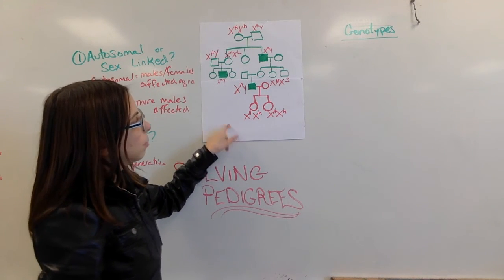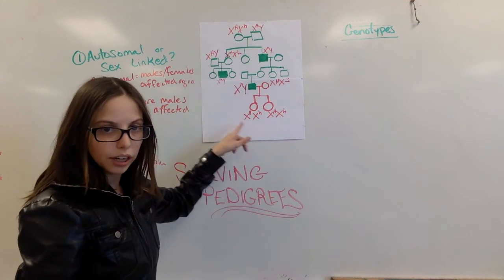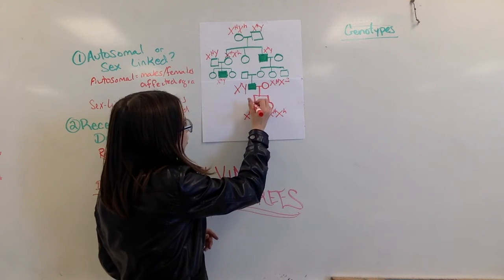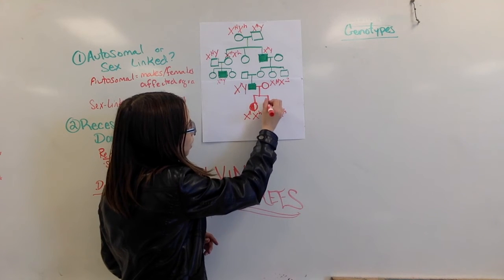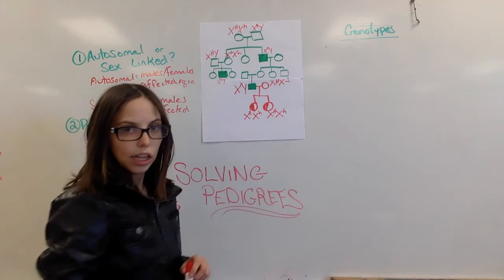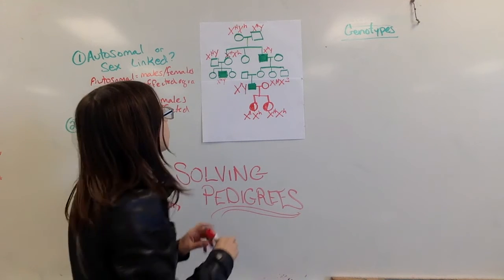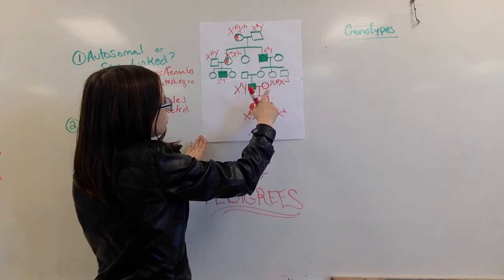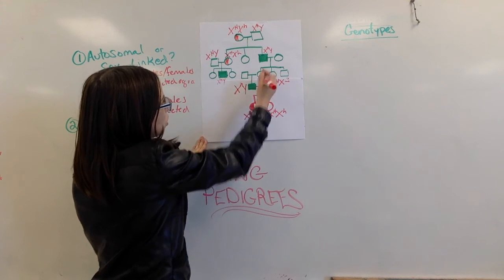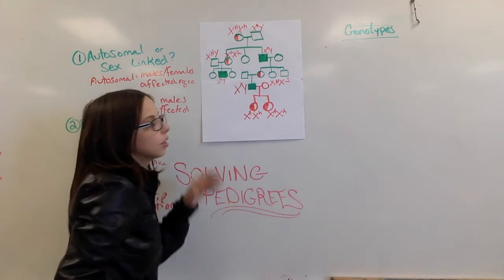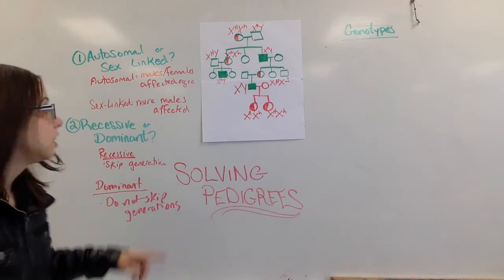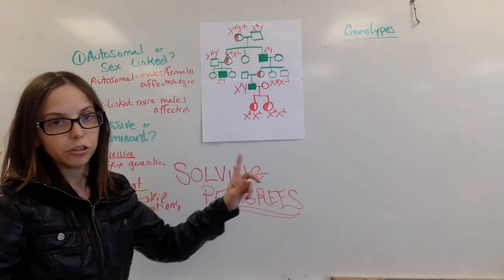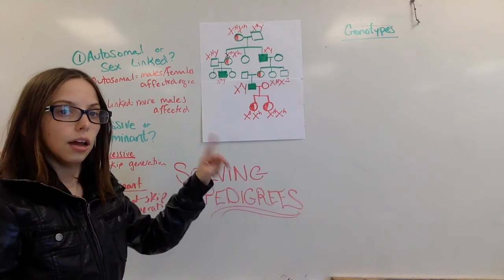Now this pedigree, I made it a little trickier for you, because I did not denote carriers. Another easy way to tell genotypes, if you have, if you have any pedigrees that have the half-filled in shapes, that is showing you where the carriers are. And this also helps you. Here's a carrier. This also helps you determine, this is another way to determine really easily if it's sex-linked or autosomal. The sex-linked traits, remember, only females are carriers. It's impossible to be a male carrier for the sex-linked traits, and males are much more likely to be affected.